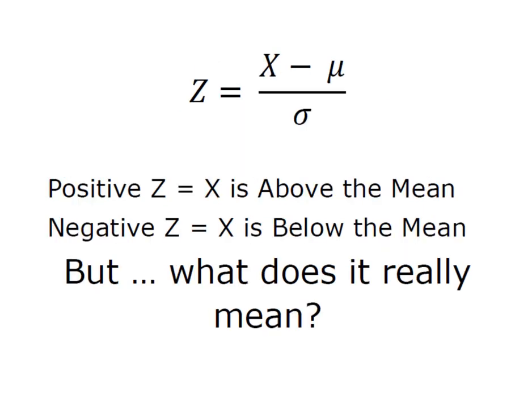So in order to find a z-score for a given value of x, we're going to take our value of x, figure out the distance it is from the mean. This becomes nothing more than the distance that an individual value falls above or below the mean, and we are going to convert it into units of standard deviation.